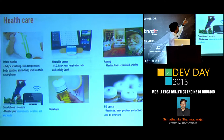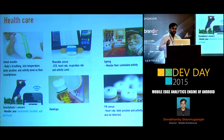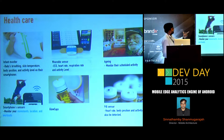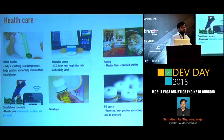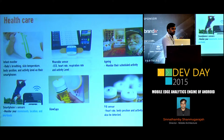In healthcare, there's a baby suit with sensors that can detect the baby's temperature and other vitals, so the mother can sleep peacefully — it will alert if something is wrong. There are also wearable sensors that detect ECG, heart rate, respiration rate, and activity. For aging, you can have sensors to monitor the movement of elderly relatives while you're at work.